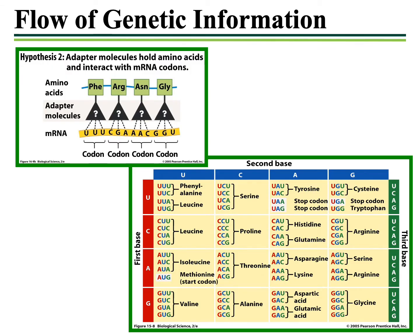In our previous lecture on transcription, I introduced what is referred to as the coding dictionary. The information found in RNA is read three nucleotides at a time. Those three-nucleotide words are referred to as codons, and there are 64 possible combinations of codons that exist — that is what you see in this table, the coding dictionary. The coding dictionary is universal, meaning it applies to all organisms, prokaryotic and eukaryotic. There are a few exceptions, but for our purposes we will treat the coding dictionary as universal.